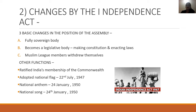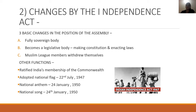What changes came with the Independence Act? There were three basic changes. First, regarding the position of the assembly — it became a fully sovereign body. Second, it became a legislative body with two primary jobs: to frame the Constitution, and to enact laws in a practical way. Third, Muslim League members had withdrawn as a protest, demanding a separate state.